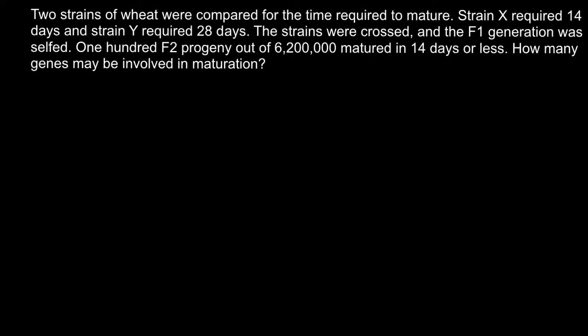In this video I'm going to talk about how by producing crosses we can find how many genes contribute to or control a trait. Here's a problem: two strains of wheat were compared for the time required to mature. Strain X required 14 days and strain Y required 28 days. The strains were crossed and the F1 generation was observed, and 100 F2 progeny out of 6,200,000 matured in 14 days or less. How many genes may be involved in maturation?